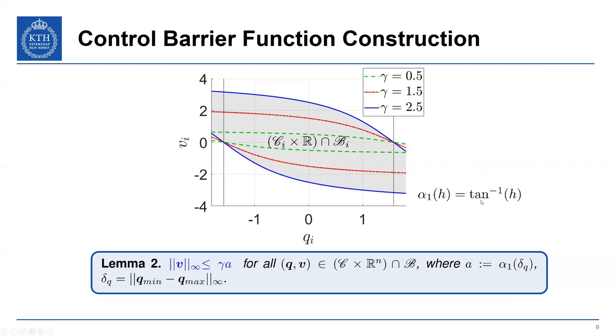And so the nice thing here is that we basically have a tuning parameter to dictate what the velocity of the system is. So a straightforward lemma is that the upper bounds on our velocity is actually proportional to gamma and some constant. This constant a is simply a function of the min and max position constraints of the system. So it's fixed if given a priori.